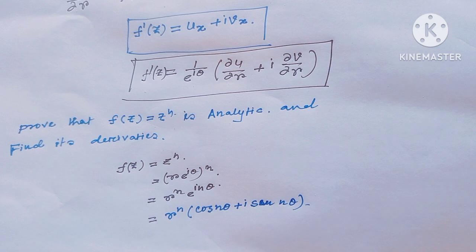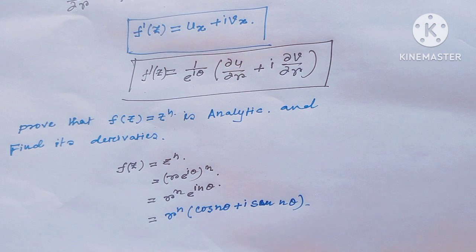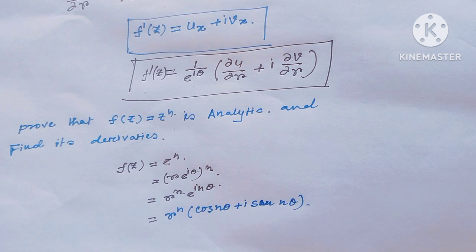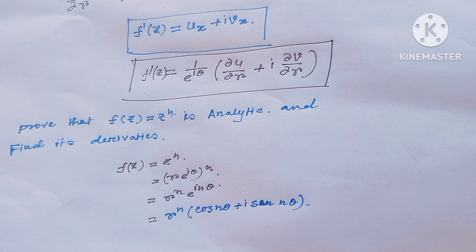As an example, I will show that f(z) = z^n is analytic and find its derivative. I will prove this using the polar form. Consider z = r·e^(iθ), so z^n = r^n · e^(inθ) = r^n (cos nθ + i sin nθ). Here u = r^n cos nθ and v = r^n sin nθ.